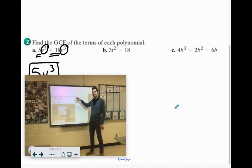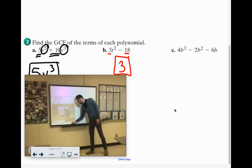3t squared, 18. 3 and 18 have 3 in common. Do they both have t's? No, the 18 does not. So we can't have a t as part of the greatest common factor. So 3 is actually the greatest thing that they have in common.